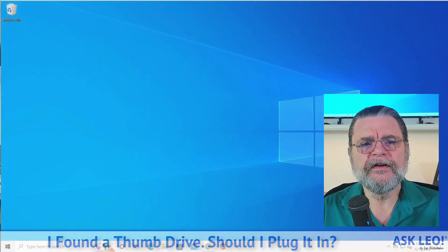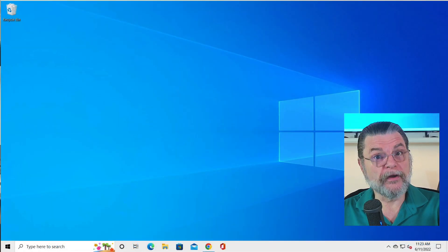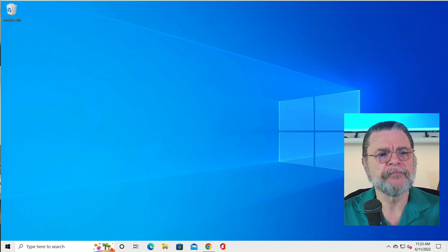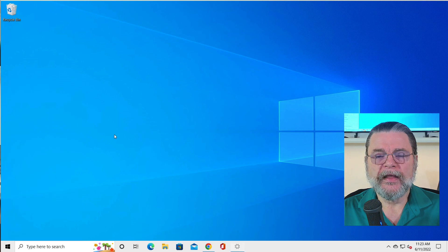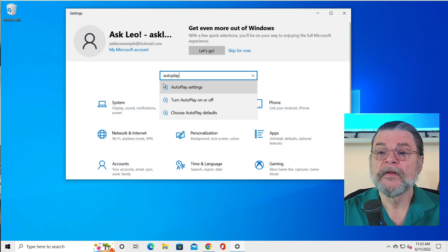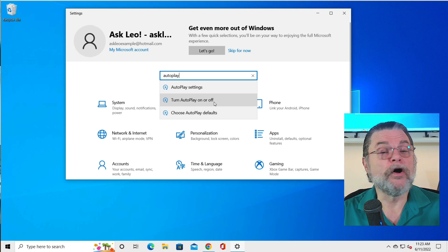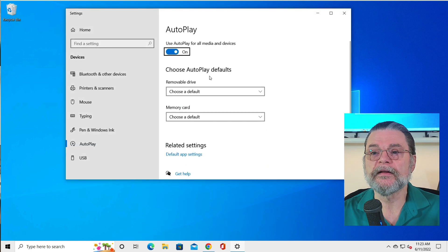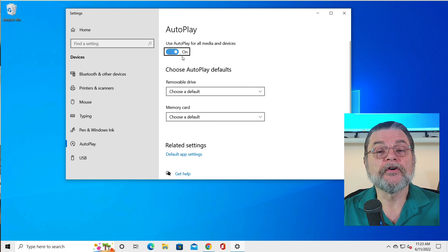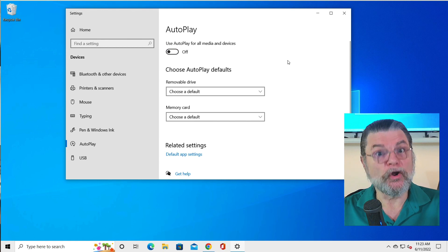We're here in Windows 10. For the record, the companion article for this video shows this in Windows 11, but I wanted to show you here in Windows 10. If you just open up the settings app and search for autoplay, you'll see that turn autoplay on or off is right there very quickly here. I've got autoplay for all media and devices. It's currently turned on. I'm turning it off.